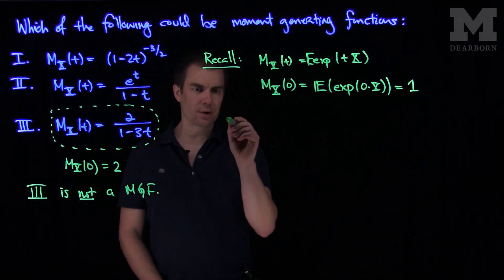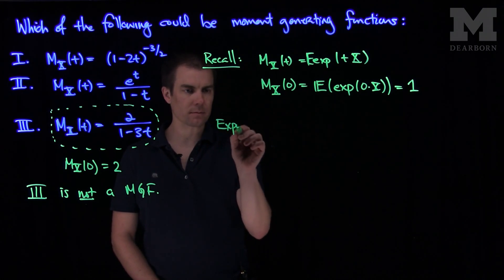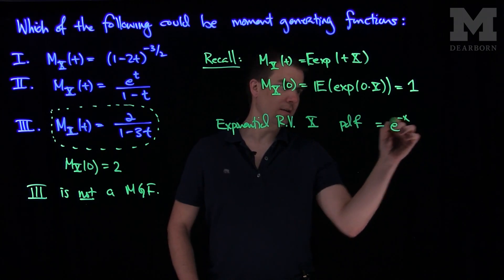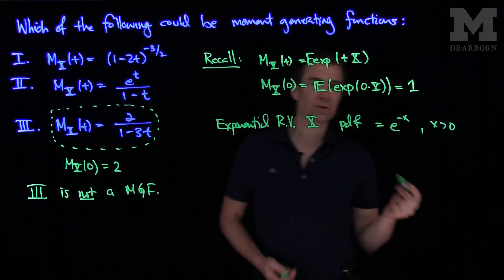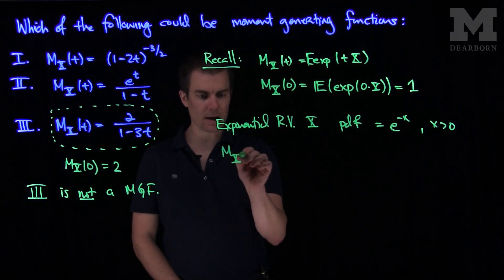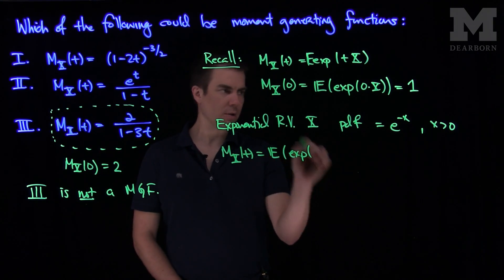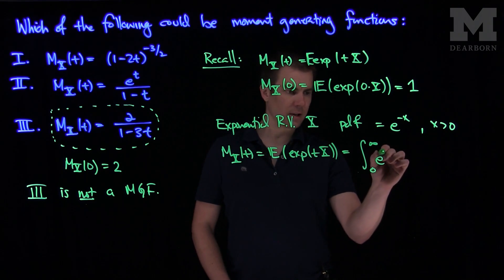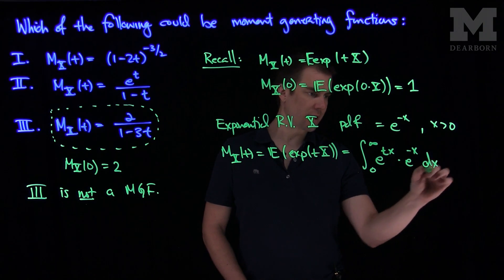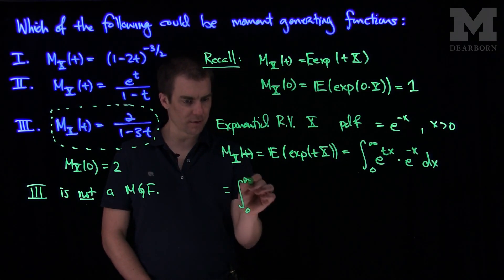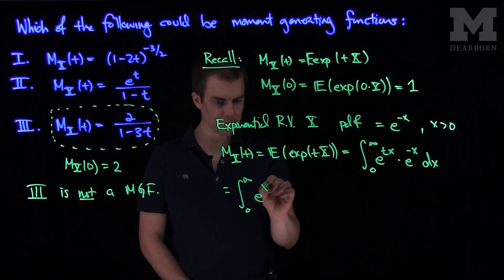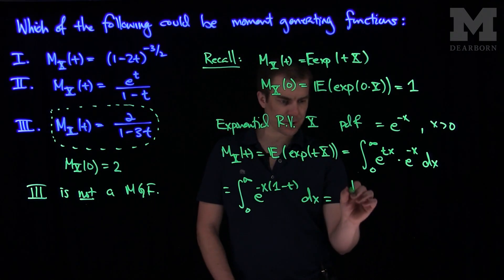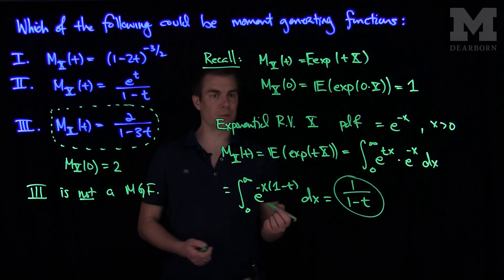Let's consider some special random variables. Consider the exponential random variable, whose PDF is e^(−x) for x positive. The moment generating function m_x(t) is the expected value of e^(tx), which is the integral from 0 to infinity of e^(tx) · e^(−x) dx. This simplifies to the integral of e^(−x(1−t)) dx, which equals 1 over (1 − t).